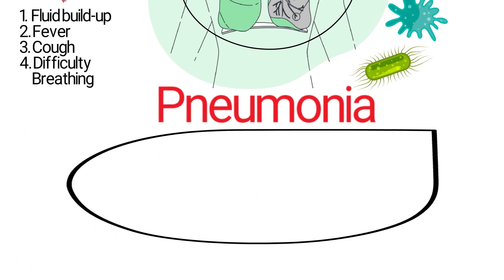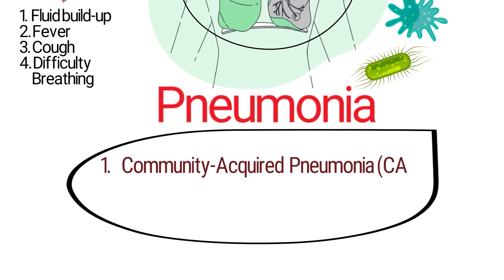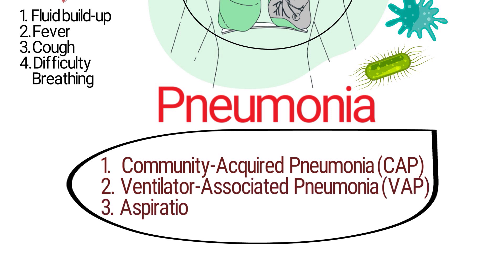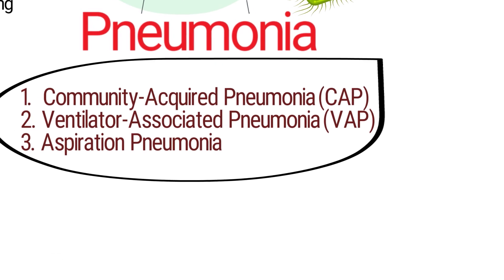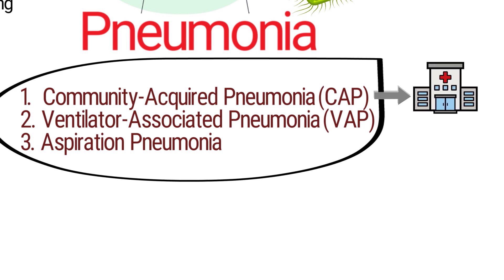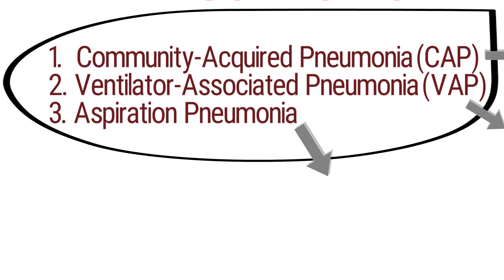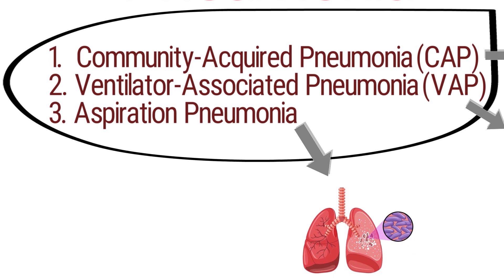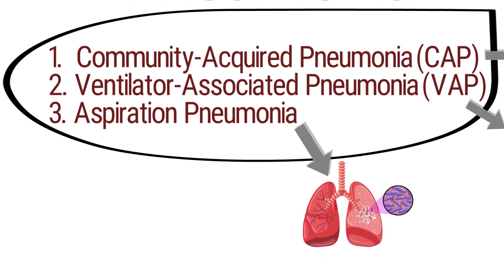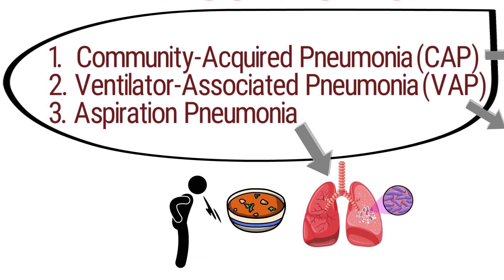The other types of pneumonia include community-acquired pneumonia, ventilator-associated pneumonia, and aspiration pneumonia. The specific type of pneumonia is classified according to how the patient acquires the disease. Community-acquired pneumonia is when the patient gets it outside of the hospital setting. Ventilator-associated pneumonia is when it's acquired while the patient is on the mechanical ventilator. Aspiration pneumonia is acquired when a patient aspirates bacteria into the lungs, usually from food, saliva, or stomach acid.